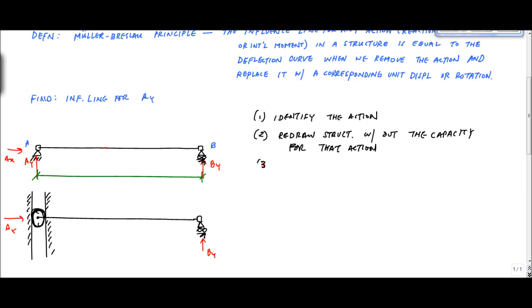Then what I want to do to find the influence line is apply a unit displacement or rotation, but unit displacement at the location where I have removed the capacity or the action, or the force or whatever it is. Apply unit displacement at location in place of the action. But really, just to basically identify the action, redraw the structure, and then apply that unit displacement.